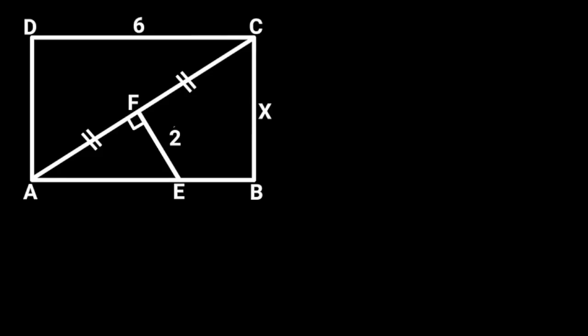In this figure, we are given a rectangle ABCD with a line segment of 2 units that is perpendicular to the diagonal of the rectangle AC. This line segment also bisects AC. If the length of the rectangle is 6 units and the breadth is X, find the value of X.